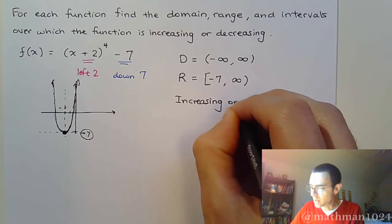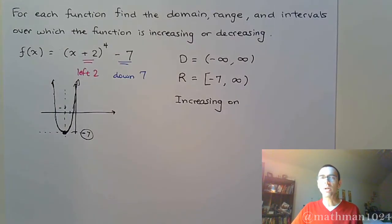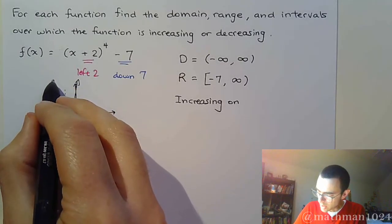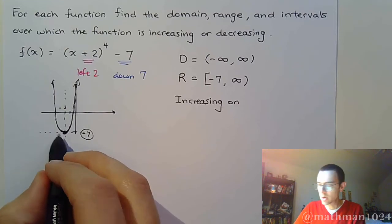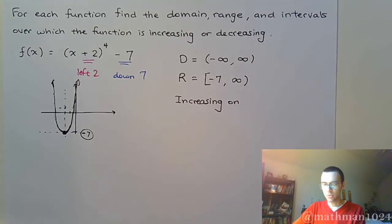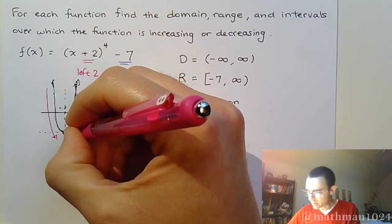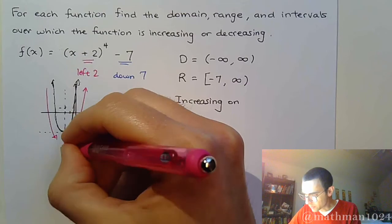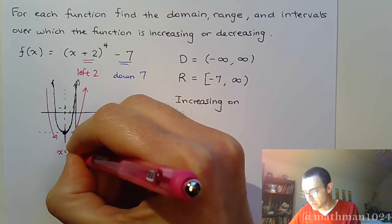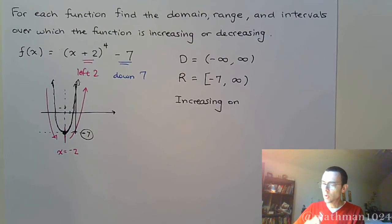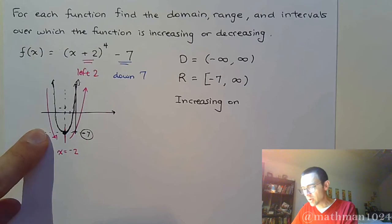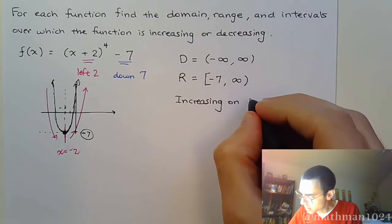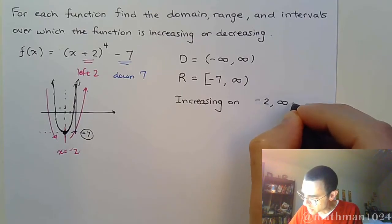Now we answer the questions about where the function is increasing. When we talk about intervals over which we are increasing or decreasing, we're talking about portions — sections — of your domain. Take your finger or a pencil and trace along the graph. You see that we start going down until we get to a certain point, and then we're going up. The value of x where things change is when x equals negative 2, because we shifted to the left two units. So I'm increasing from negative 2 to infinity.